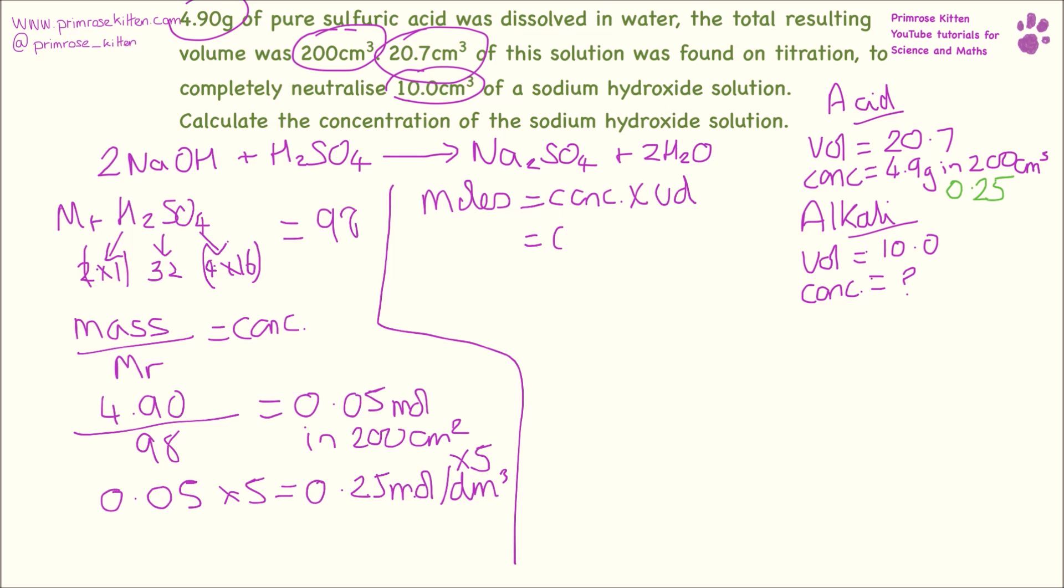Our concentration we've just worked out as 0.25. Our volume of our acid was 20.7, but we want this to be in decimeters because that's what we need to be in, so we need to divide that by 1000, which gives us 0.005175 moles of acid used in this titration.